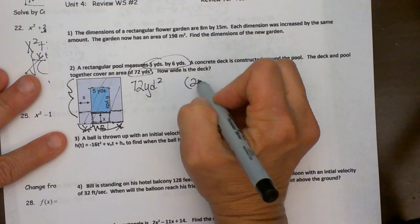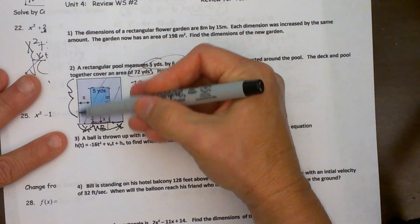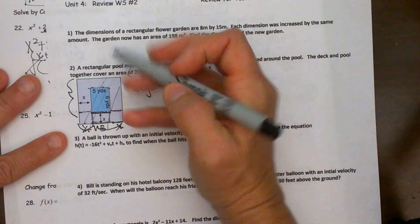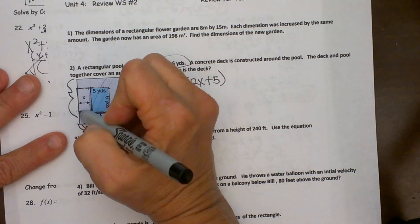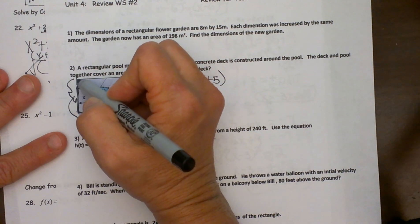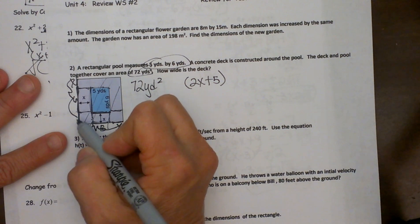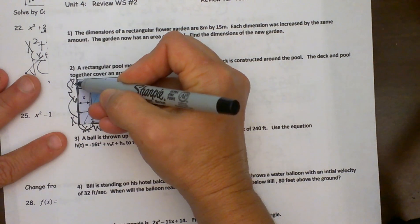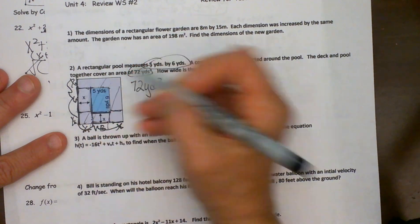So that width is two x plus five. Now going the other way, the longer direction, I have this dimension right here is six. So let's label that as six. Then we know this section is an x and this little section down here is an x. So I have an x plus a six plus an x. So that is two x plus six.